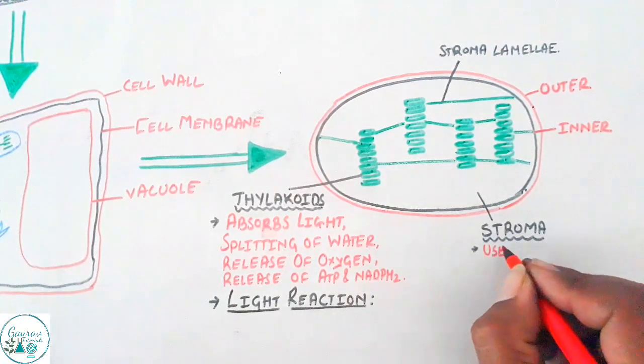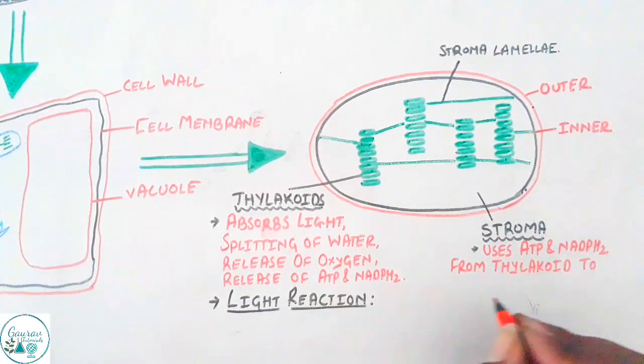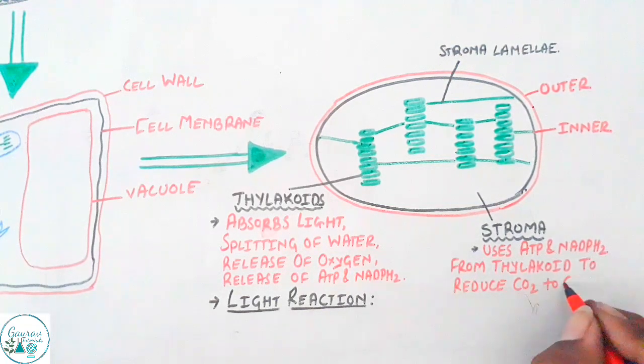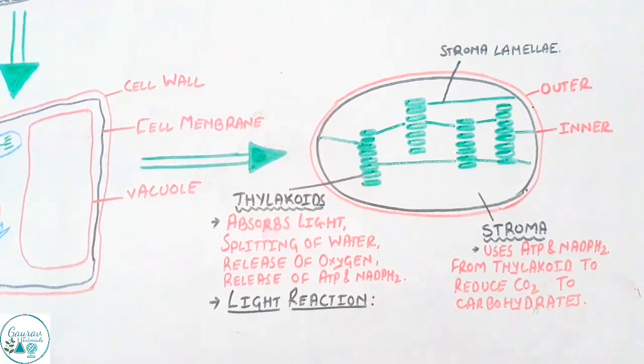The light reaction would take place in the thylakoid. Stroma would use the ATP and NADPH2 from thylakoid and reduce carbon dioxide to carbohydrate. Since this process being independent of light, these reactions are called as dark reaction.